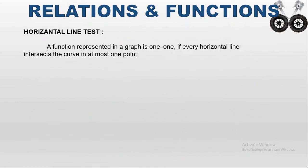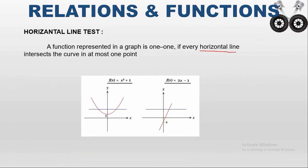Next is the horizontal line test. If we draw any horizontal line — a line drawn parallel to the x-axis — and the horizontal line intersects the curve at at most one point, then the graph represents a one-to-one function. For example, if the horizontal line intersects the curve at two points, it is not a one-to-one function. If it intersects at only one point, the graph is a one-to-one function. To test whether a graph is one-to-one, we use the horizontal line test.